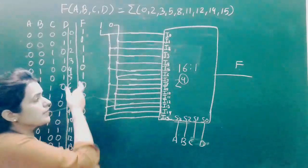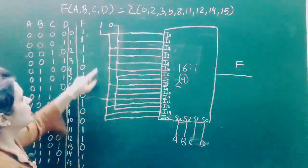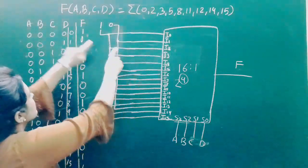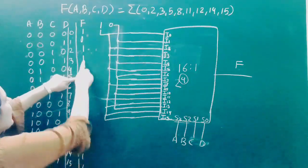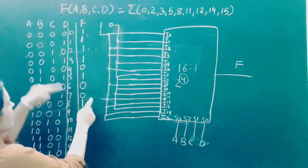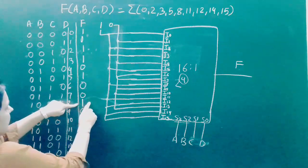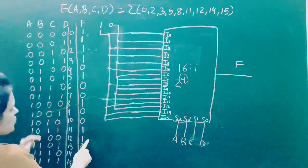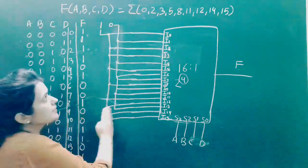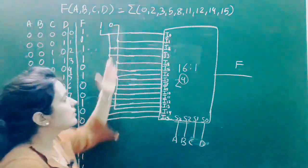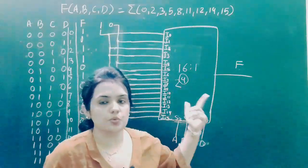All connections have been made according to the truth table. I0, I2, I3, I5, I8, I11, I12, I14, and I15 are connected to logic 1, and all remaining input lines are connected to logic 0.